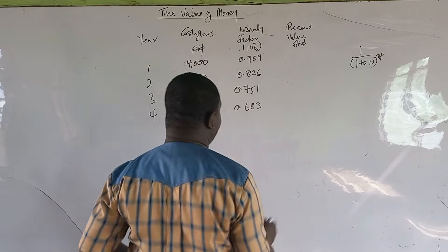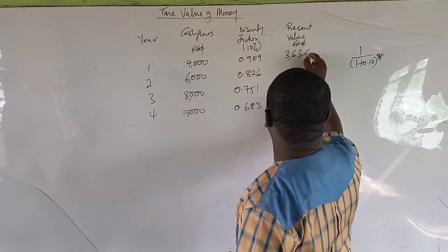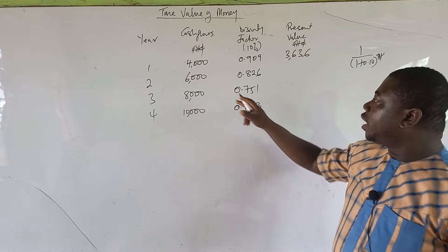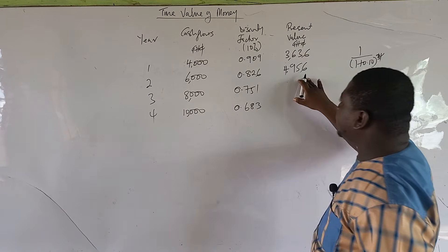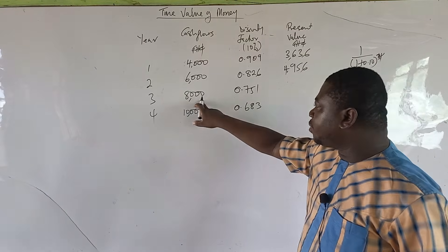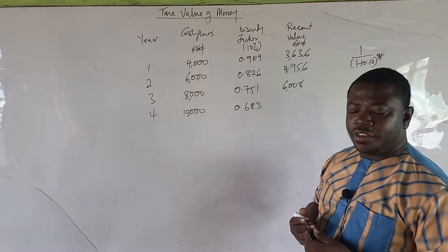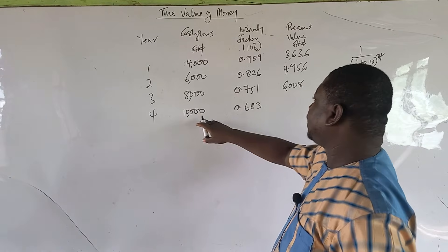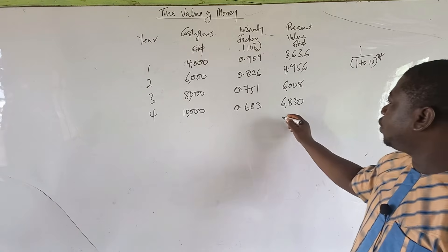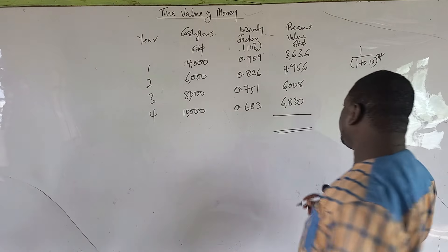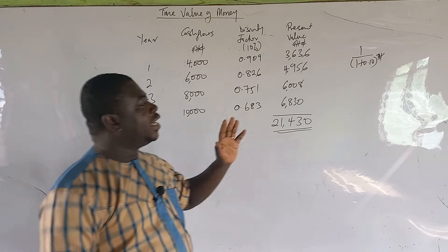We have now found the discounting factor for each year. To find the present value, multiply each discounting factor by the corresponding cash flow. 4,000 × 0.909 = 3,636; 6,000 × 0.826 = 4,956; 8,000 × 0.751 = 6,008; and 10,000 × 0.683 = 6,830. These match exactly what we got from the previous calculation. The total present value is 21,430 Ghana cedis.